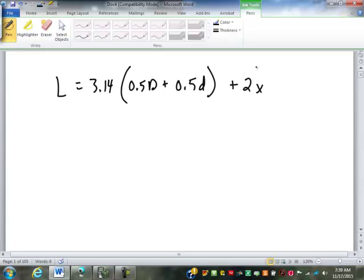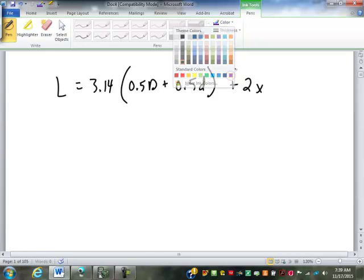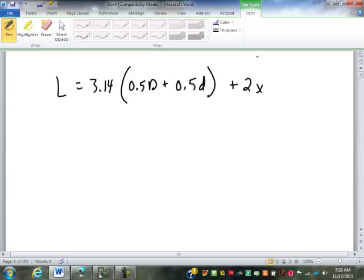And they're giving us the formula L is 3.14 times 0.5 big D plus 0.5 little d plus 2x. Now, this is just an approximation. There are other adjustments that can be made. X is the distance between center to center from the pulleys. Big D is the diameter of the large pulley. Little d is the diameter of the little pulley.